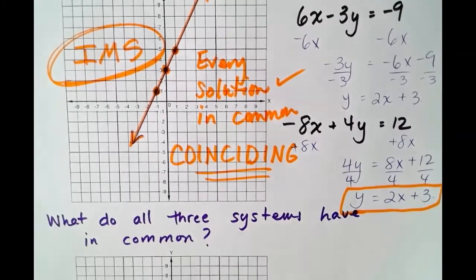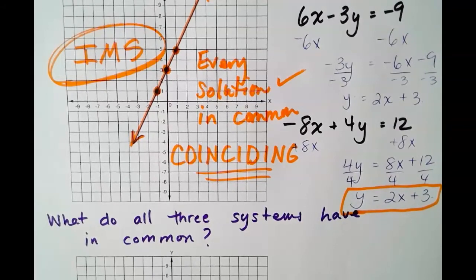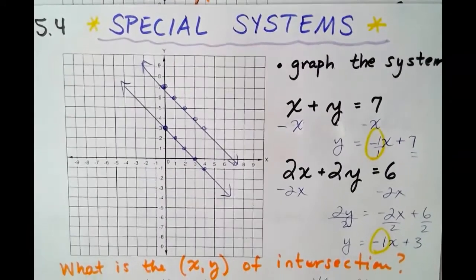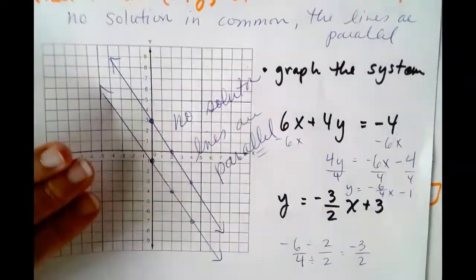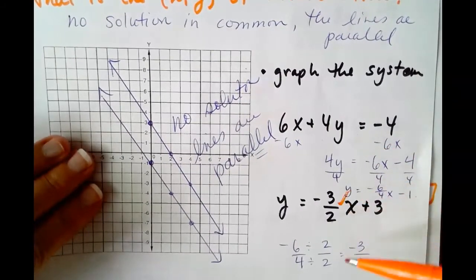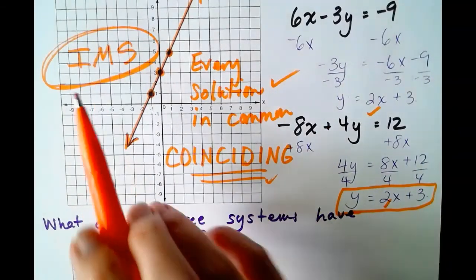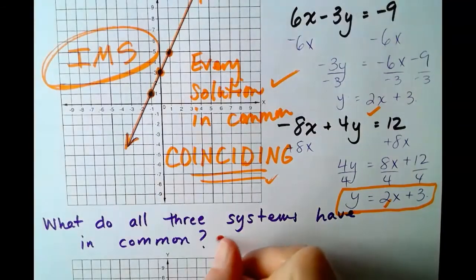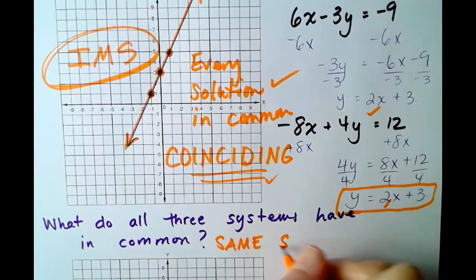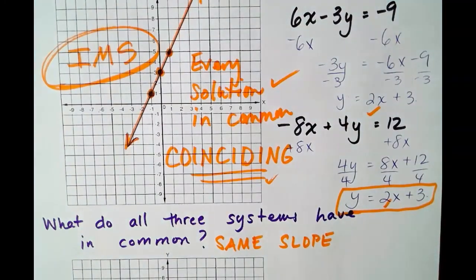But let's answer this last question at the bottom. What did all three of the systems that we just looked at have in common? Well, we go back. The first system had the same slope. The second system had the same slope. And the third system also has the same slope. So lines that are parallel will have no solutions in common. But lines that coincide will have infinitely many solutions in common. But what do all three systems have in common? They all had the same slope. So those are some special systems.